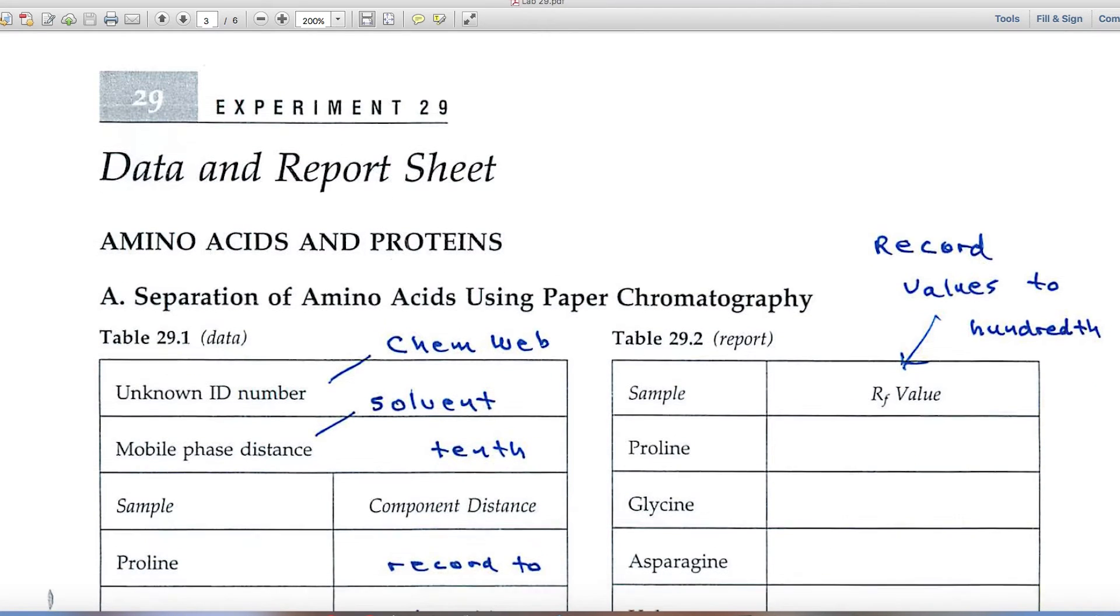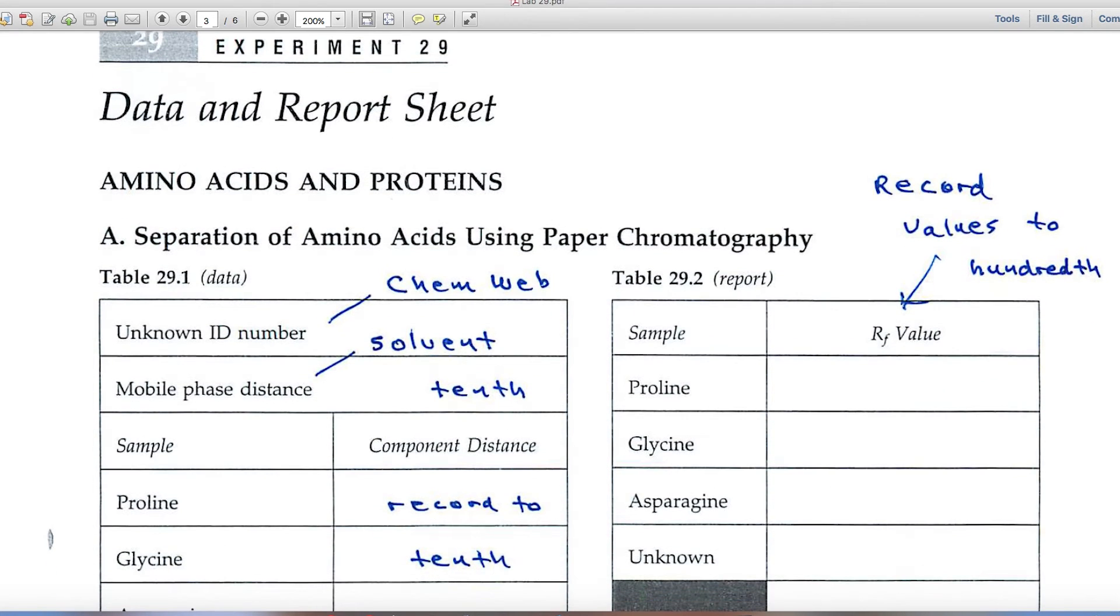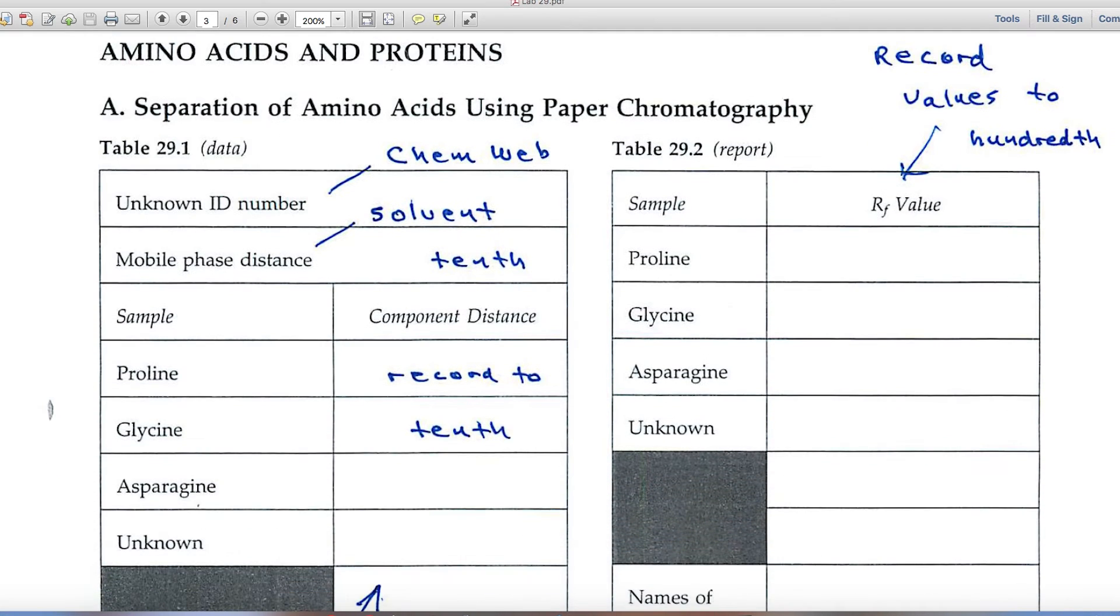Here are the data and report pages now. And in this Experiment 29, students separate amino acids using chromatography, paper chromatography.